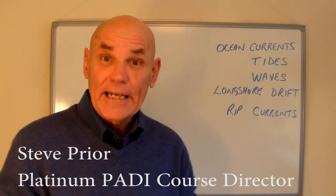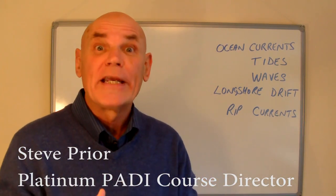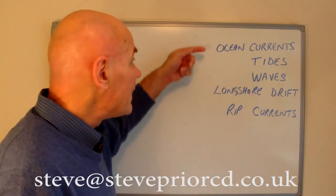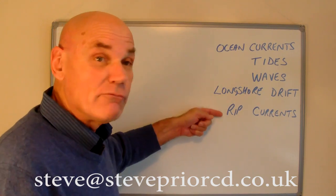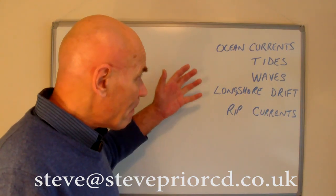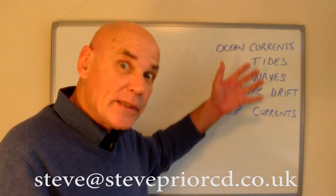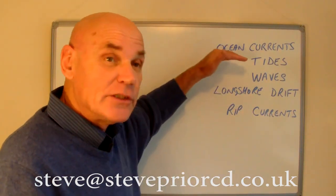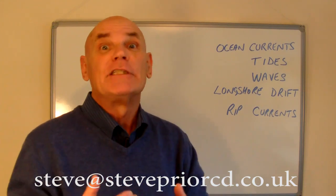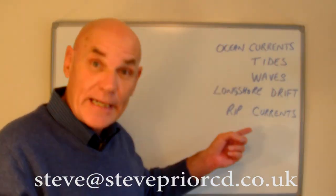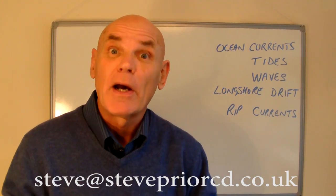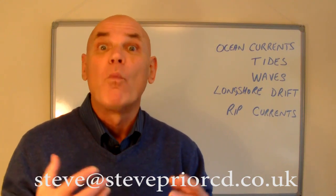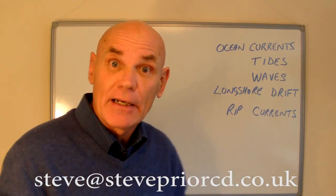Let's take a range of subjects that have all got one thing in common, and that is movement of water. They're going to be ocean currents, tides, waves, longshore drift, and rip currents. People often get confused with these, and start answering questions about one topic with answers from another. The exam board is very specific about the words used in questions, and equally specific about the words they want in the answers. Let's look at these one at a time and work out a way of thinking so we can answer the questions correctly.